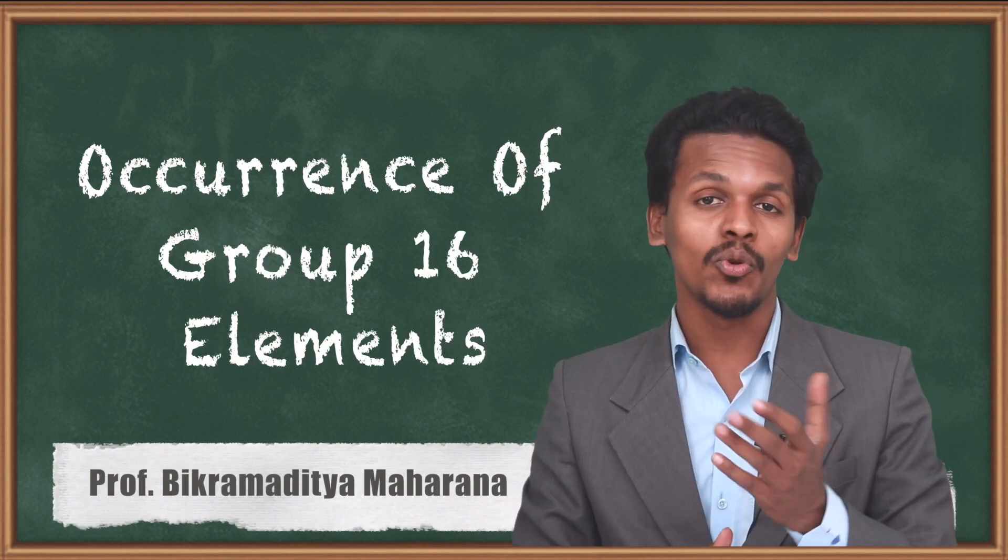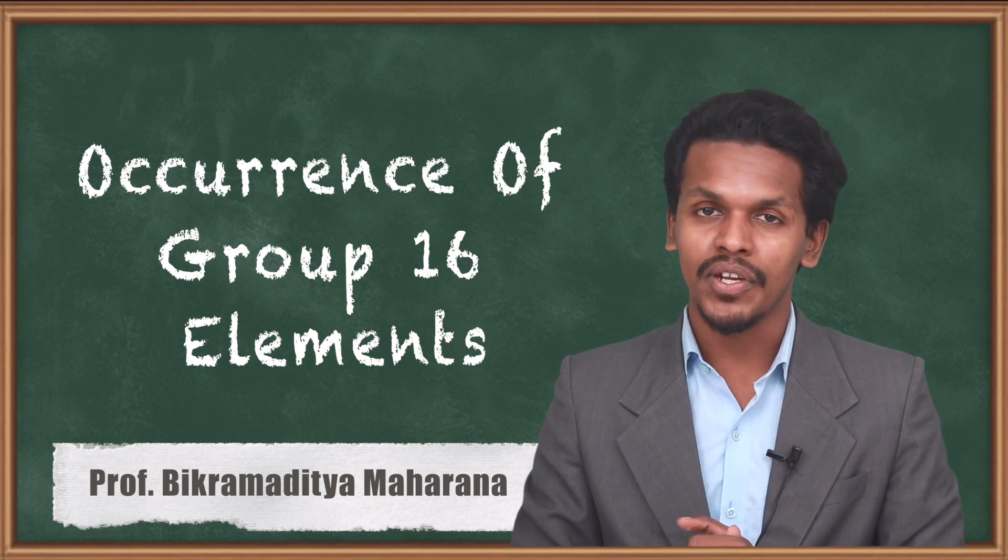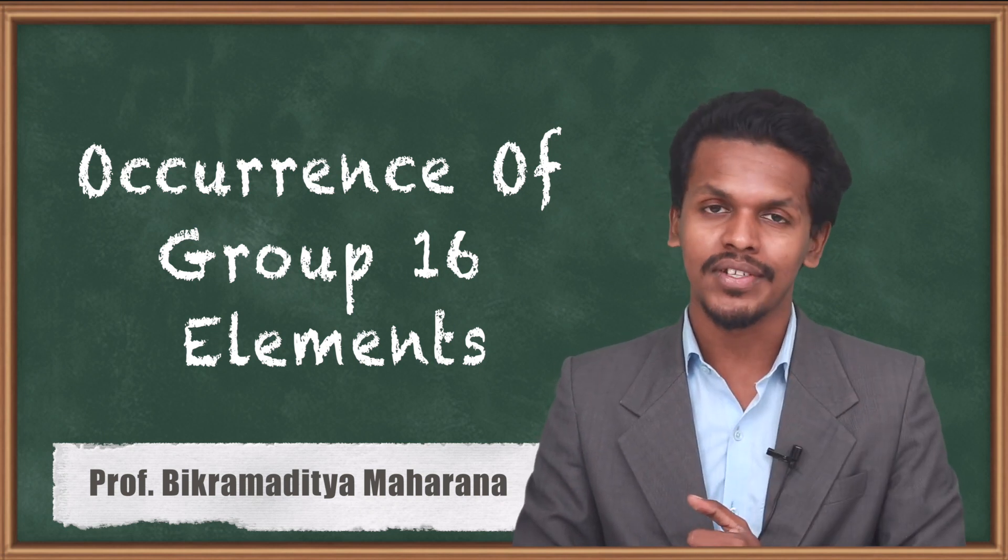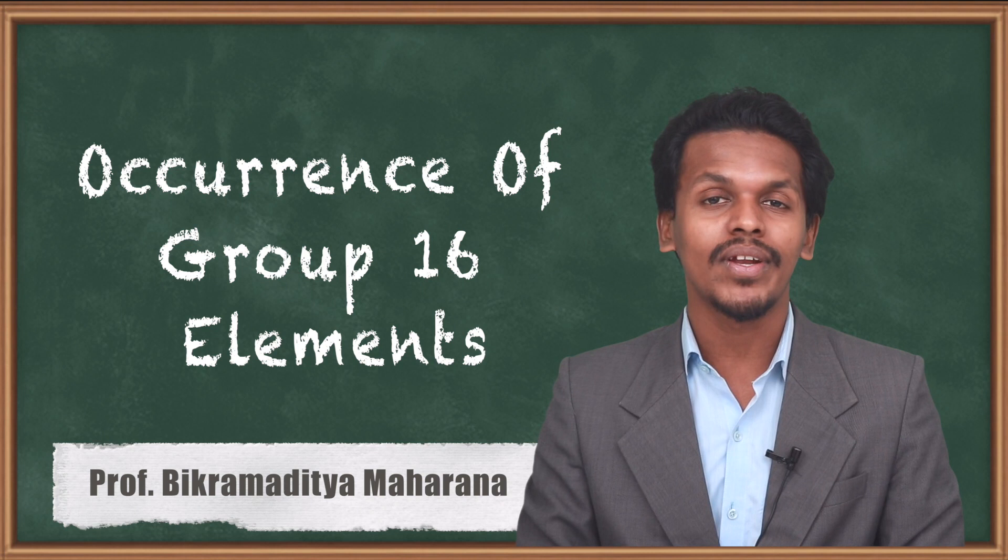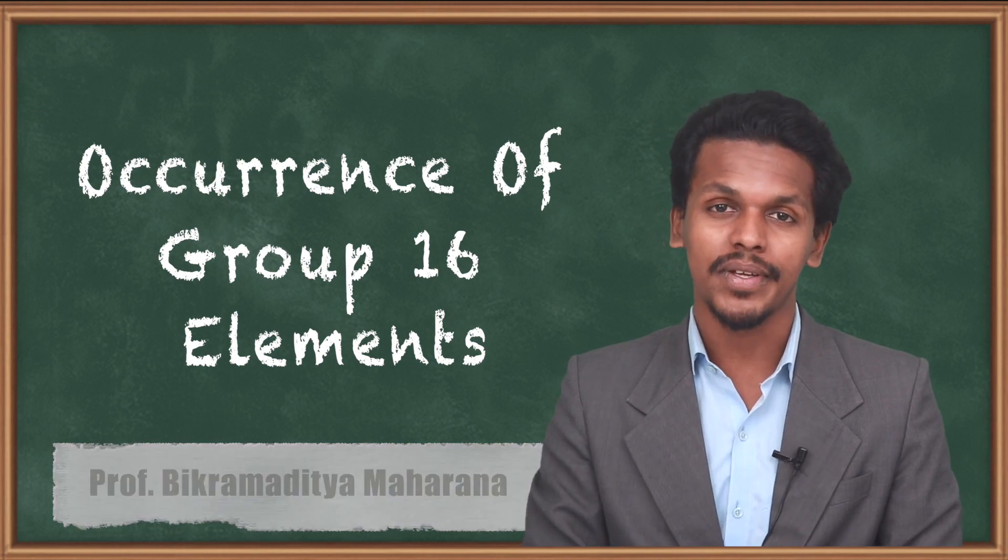In the previous lecture we discussed the Group 16 elements and their electronic configuration, that is the general electronic configuration. Now in this topic we are going to talk about the occurrence of Group 16 elements. Where do these Group 16 elements occur? That is what I am going to talk about in this topic.